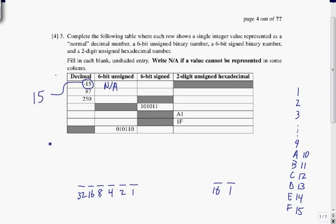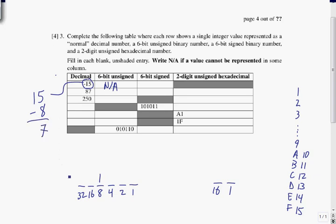How do we represent 15 as a binary number? It doesn't have a 32 or a 16, but it does have an 8. Subtract 8, put a 1 there. That leaves 7, which has a 4 in it. Subtract 4, put a 1. That leaves 3, which has a 2 in it. Subtract 2, put a 1. That leaves 1, put a 1. So we get 001111 — which makes sense, it's one less than 16.